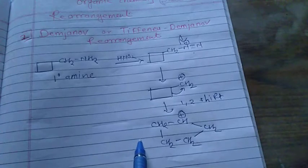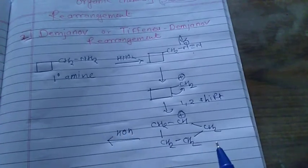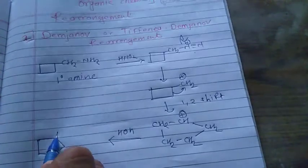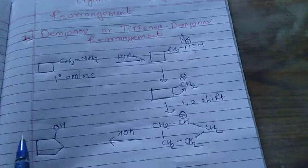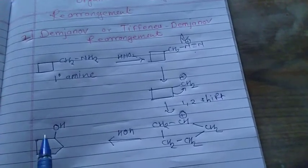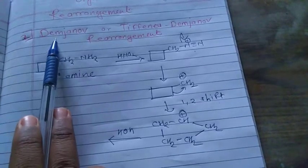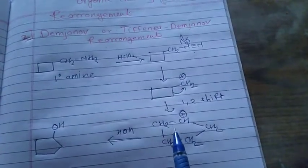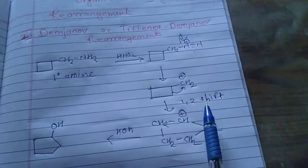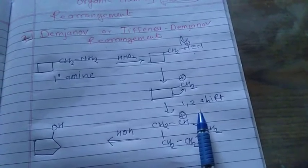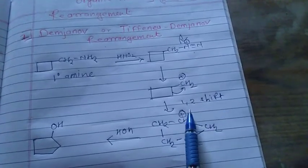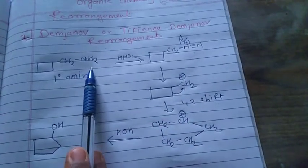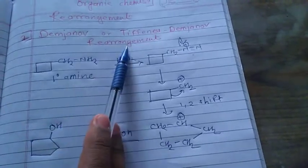After addition of water, there is a formation of an alcohol — cyclopentanol. This reaction is known as the Demyanov rearrangement reaction. The 1,2 migration or 1,2 shift is initiated through the formation of a carbocation by diazotization of the primary amine. This reaction is known as the Demyanov rearrangement reaction.